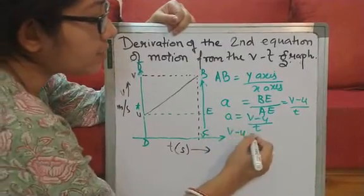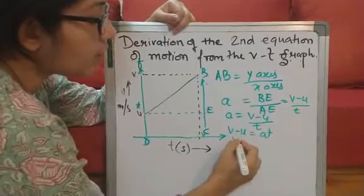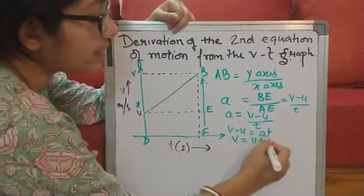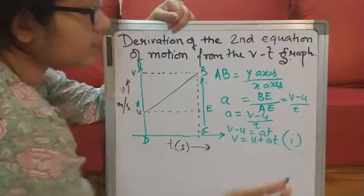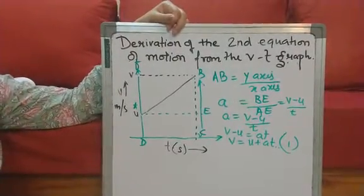Or v minus u is equal to at. Or v is equal to u plus at. This is the first equation of motion.